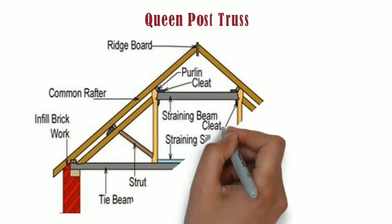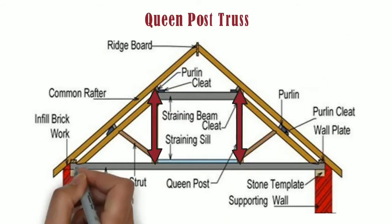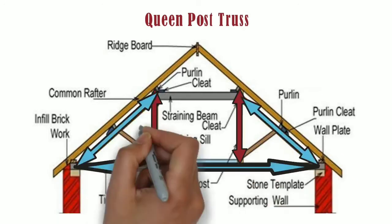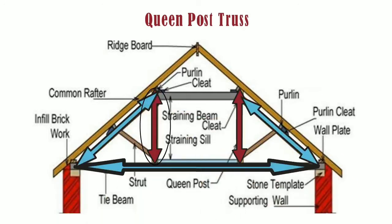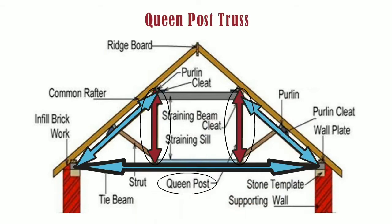On the other hand, queen post truss is defined as a pitched roof support provided with two vertical tie posts connected between the tie beam and the rafters. These two vertical posts are called as queen posts.